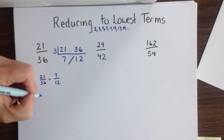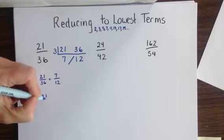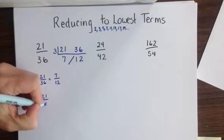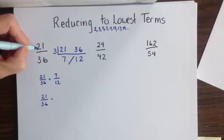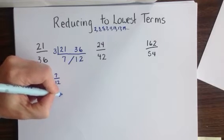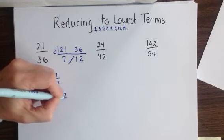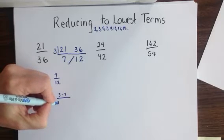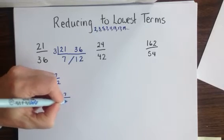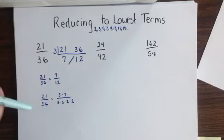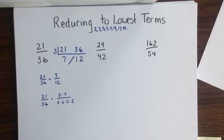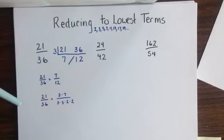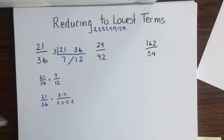The way that your textbook addresses this problem is they have you factor each one of the parts of the fraction, the numerator and the denominator, separately. So they factor the 21 into a 3 times 7 and the 36 into a 3 times 3 times 2 times 2. And I don't believe that they really show a lot of examples of how they arrived at that answer.